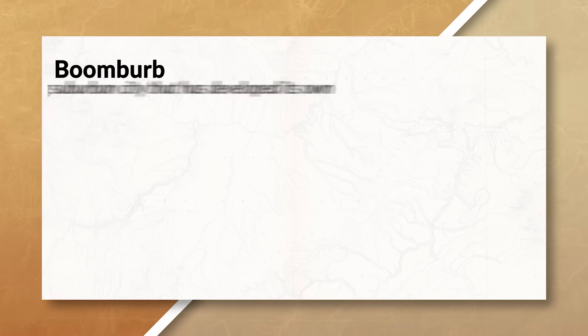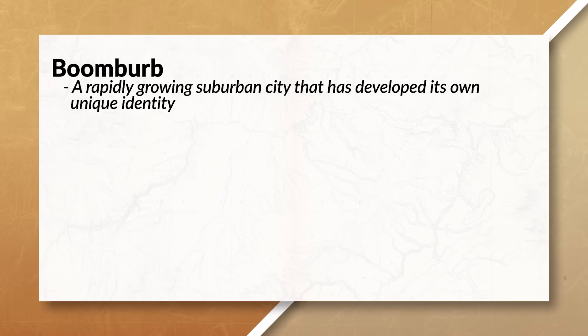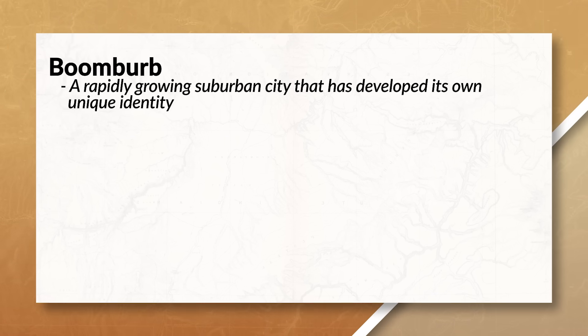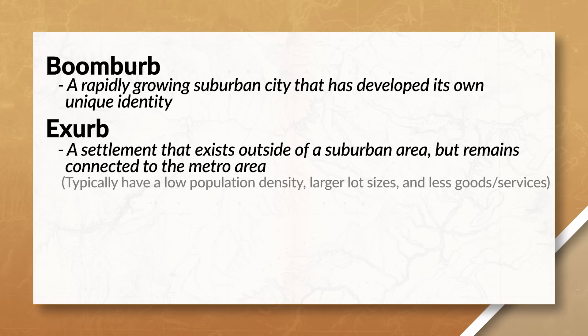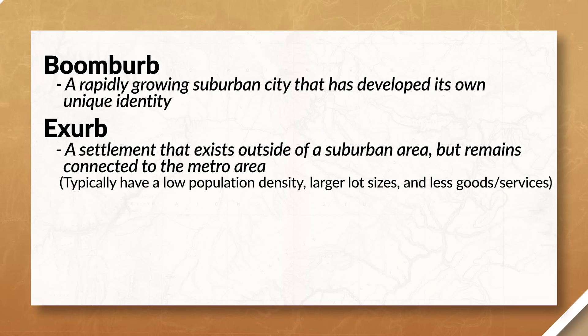A boomburb is a suburban city that is rapidly growing. Often, these cities experience so much growth that they develop their own unique identity, but still maintain that suburban feel. Exurbs, on the other hand, are settlements that exist outside of a suburban area but still remain connected to the larger metro area. Individuals who live in an exurb will often get goods and services from a nearby boomburb or edge city instead of driving into a more densely populated urban area.